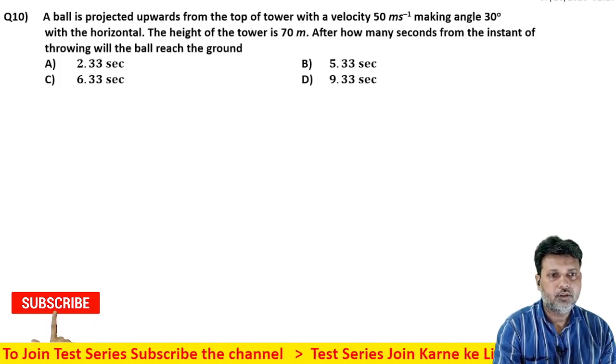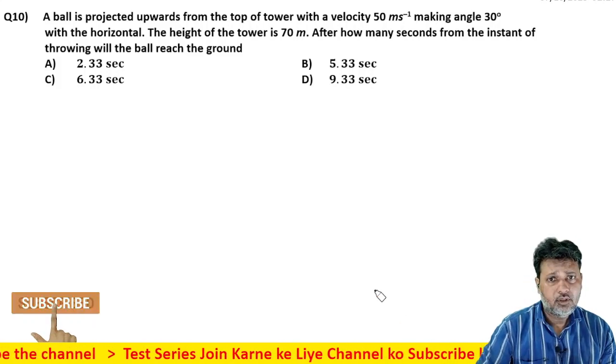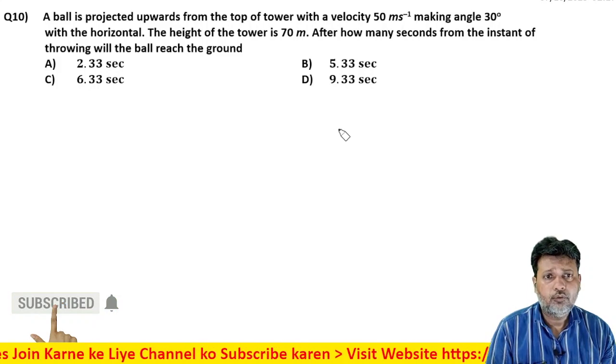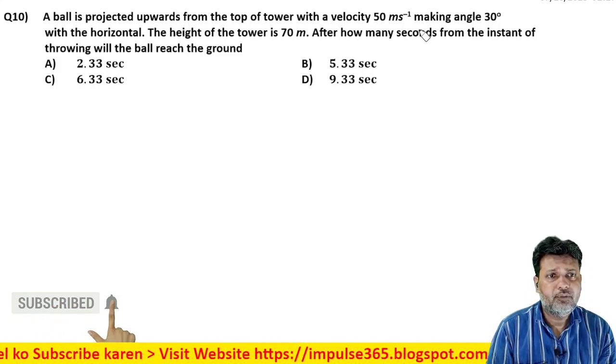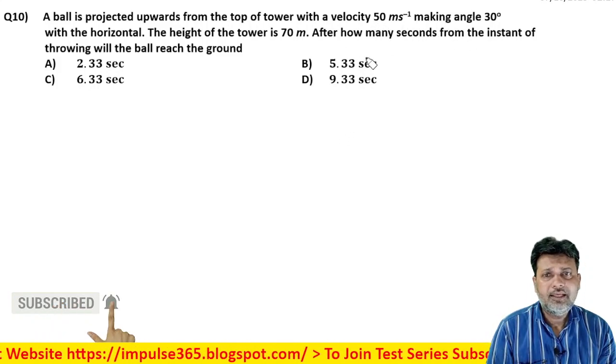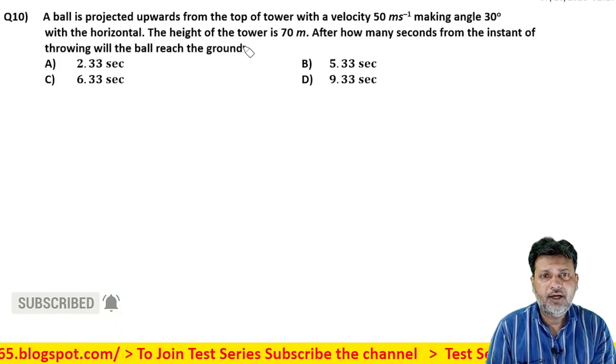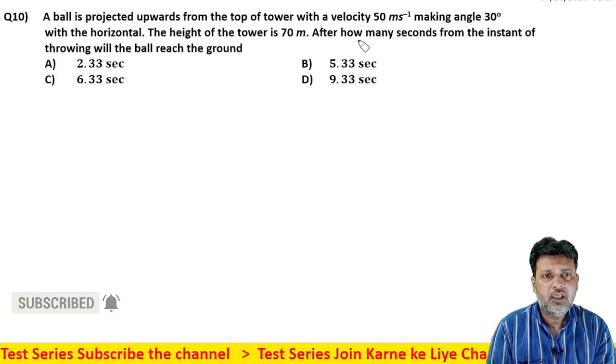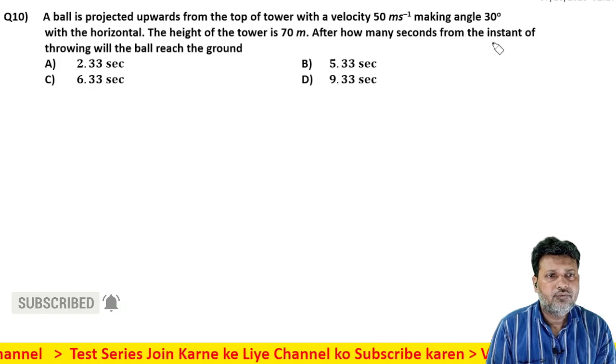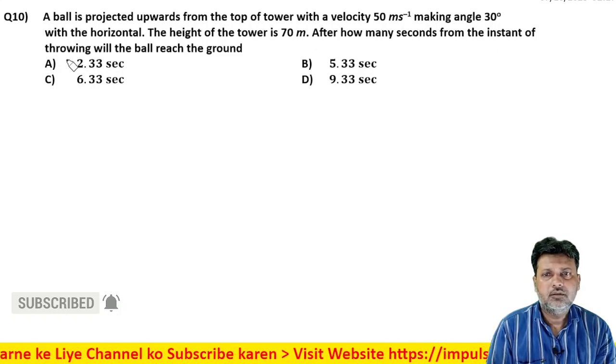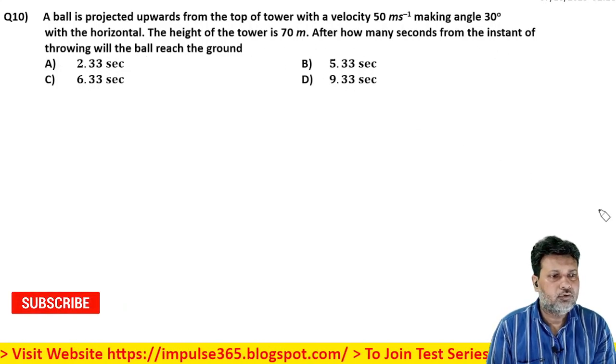So next question, question read. A ball is projected upward from the top of tower with velocity 50 meter per second making angle 30 degree with the horizontal. The height of the tower is 70 meter. After how many seconds from the instant of throwing will the ball reach the ground?